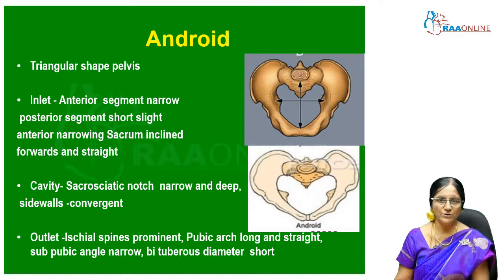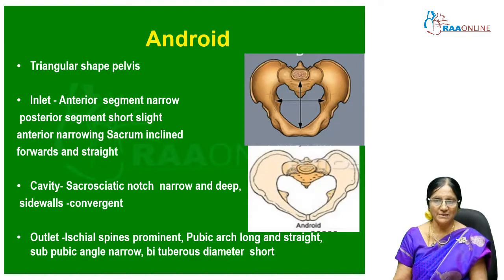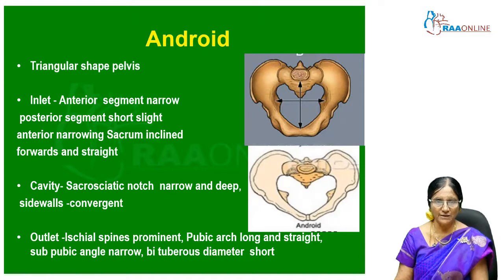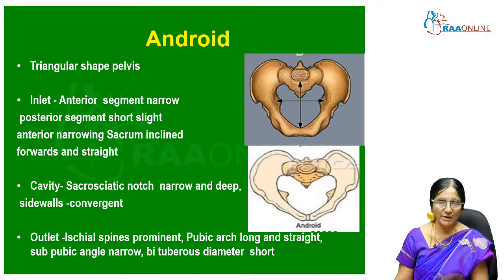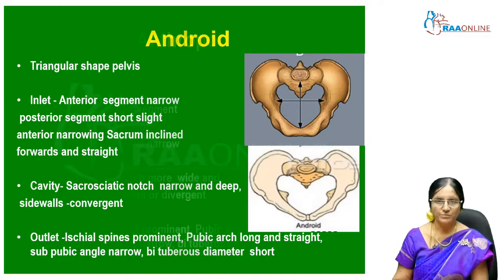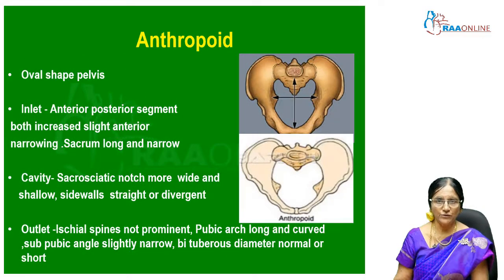In the android pelvis, the inlet is triangular with a narrow anterior segment and short posterior segment, with slight anterior narrowing. The sacrum inclines forward and is straight. The sacrosciatic notch is narrow and deep, side walls are convergent, ischial spines are prominent, pubic arch is long and straight, subpubic angle is narrow, and the bituberous diameter is short.